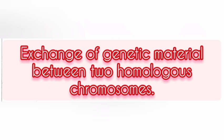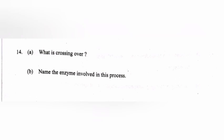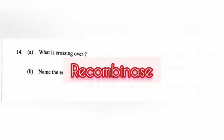A) What is crossing over? Answer: exchange of genetic material between two homologous chromosomes is known as crossing over. B) Name the enzyme involved in this process. Answer: recombinase.